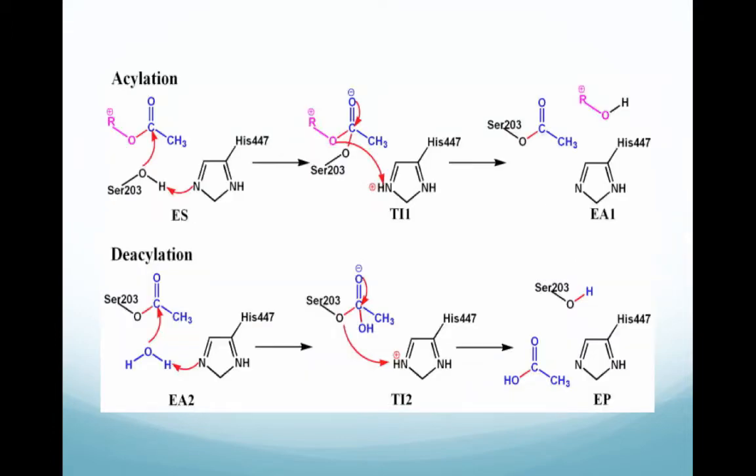Here's the mechanism for the degradation, which is similar to the chymotrypsin mechanism studied in class. The initial attack by the serine residue on the carbonyl carbon forms a tetrahedral intermediate, which is then cleaved by immediate attack by water.